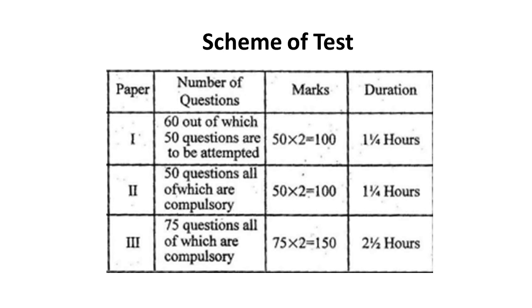Paper 1 is the teaching aptitude paper, which will have 60 questions of which you have to answer 50 questions. The core paper — the subject in which you have done your masters — will be paper 2 and paper 3. For paper 1, we have made videos where you can watch and improve your score.